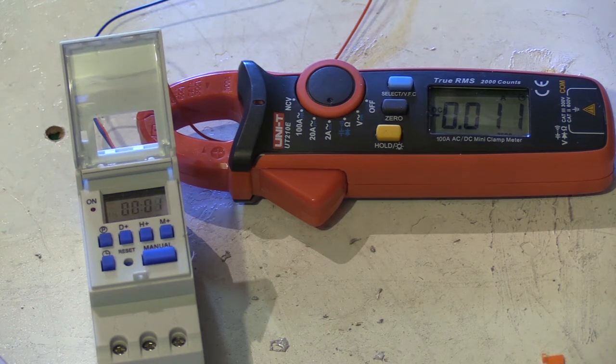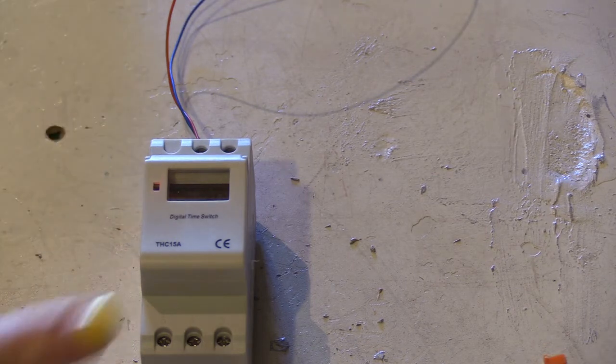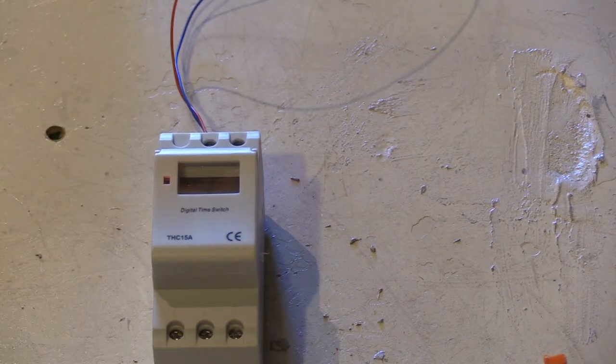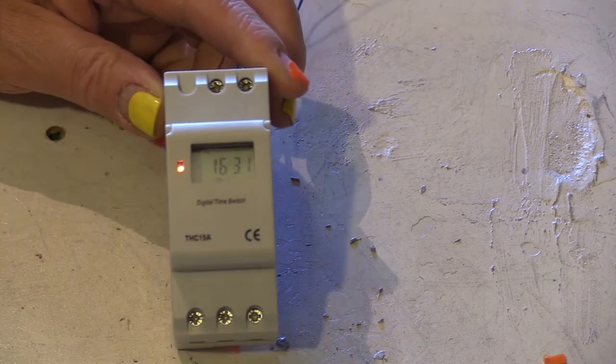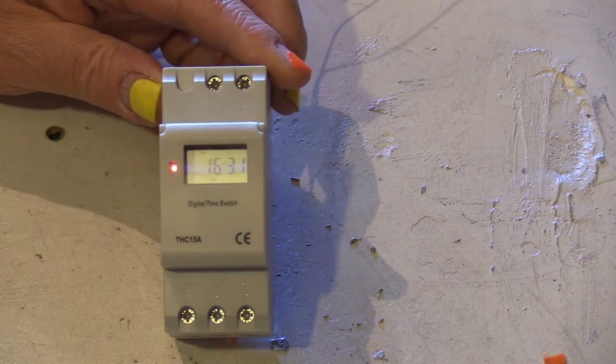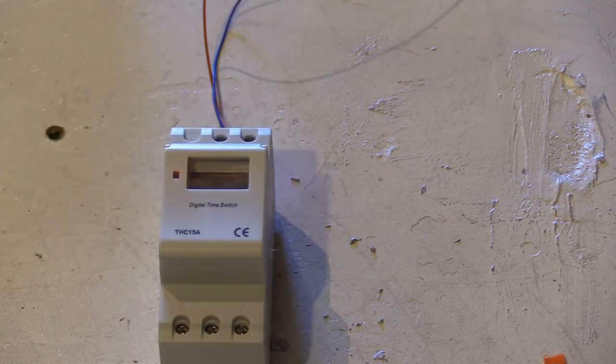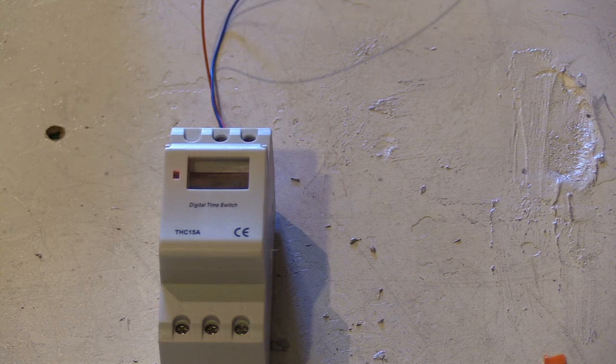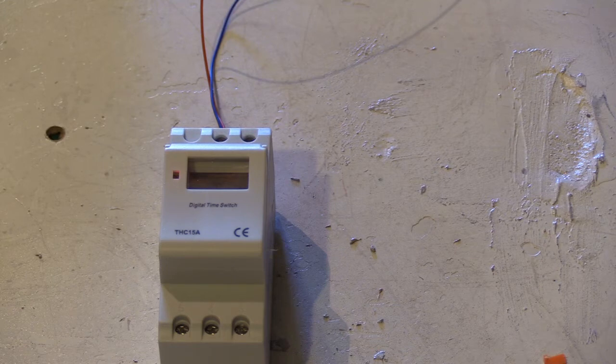7 milliamps for the relay. I've now set it up. It has changeover contacts down the bottom, rated up to 16 amps. I've set it for the correct time, it's half past four, and as you can see it's on because I've told it to come on at seven, go off at ten. It does have multiple on and off times, up to 16 per day, but I don't need that.